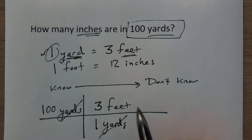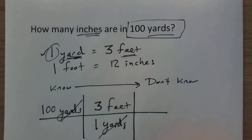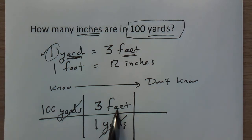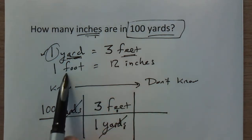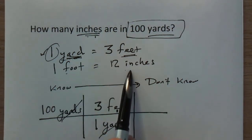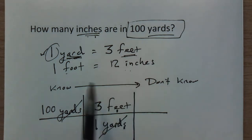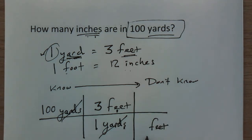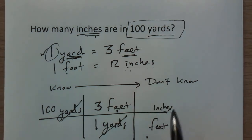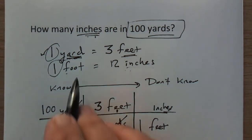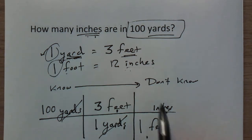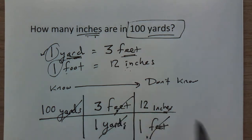Because we've got yards on the bottom and yards on top, they cancel out — yards over yards goes away. Time to put the next picket in. I've got feet on top and I don't want feet, I want inches, so I look at my next conversion factor: one foot equals twelve inches. Since I want feet to go away and it's on top, I put feet on the bottom over here, and inches goes on top. I put one next to feet and twelve next to inches. The feet on top and feet on the bottom cancel each other out.